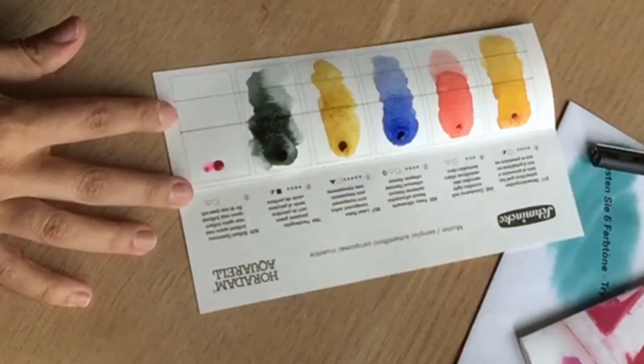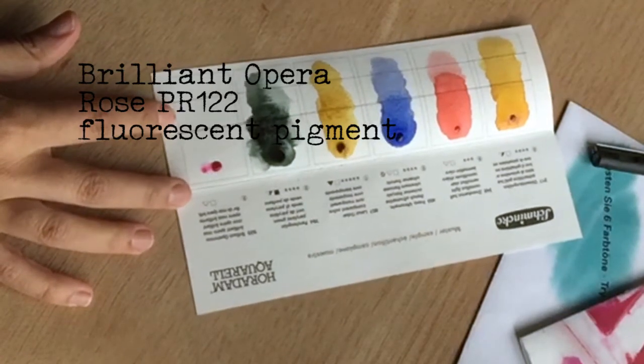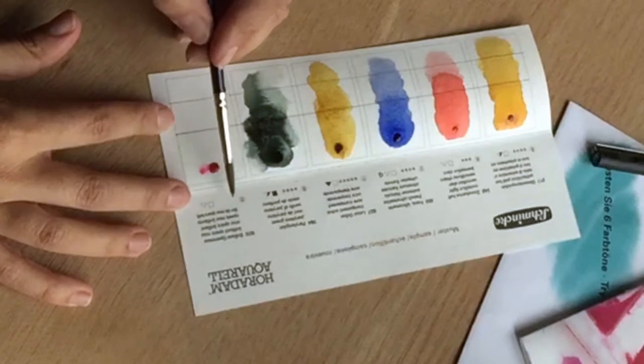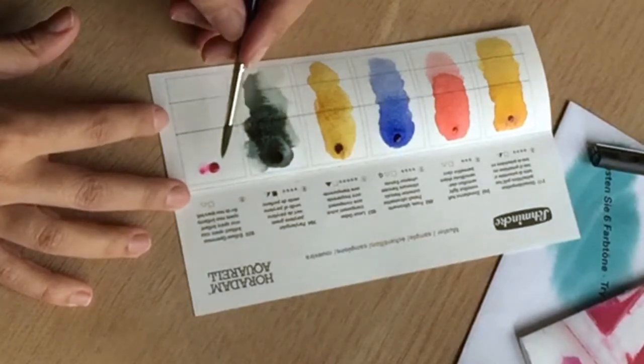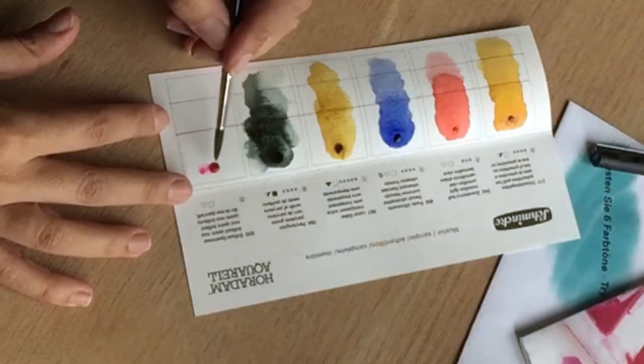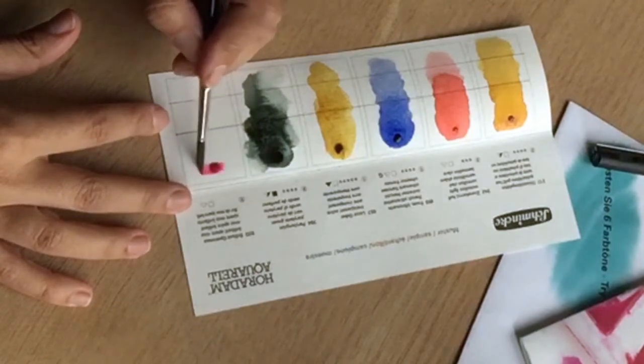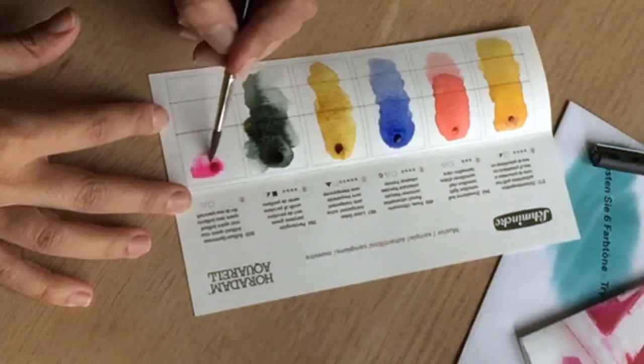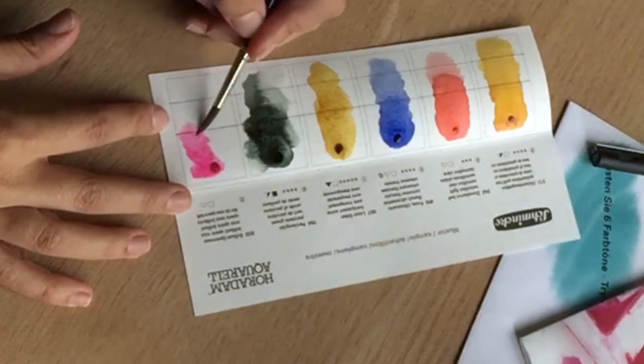And this is Brilliant Opera Rose. It has no lightfastness rating because they don't test them. All these brilliant neon colors, we know they will fade, so we have to be careful when we use them. Wow.